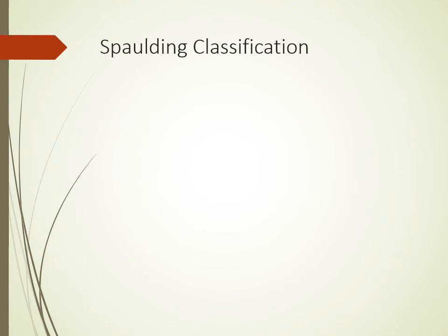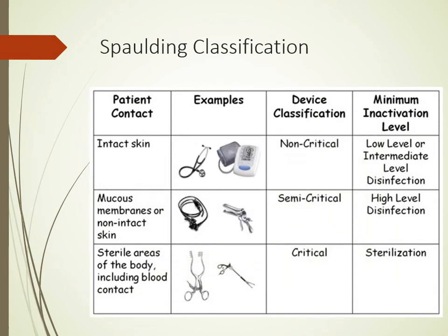Earl H. Spaulding in 1971 devised a rational approach to classify medical devices into three categories according to the degree of infection risk. Non-critical items include blood pressure cuffs, ECG electrodes, thermometers, and stethoscopes. Semi-critical devices include respiratory equipment, non-invasive flexible endoscopes, bedpans, and urine bottles. Critical items include surgical instruments, implants, prostheses, syringes, and needles.